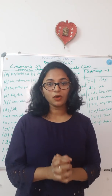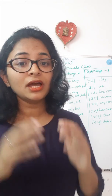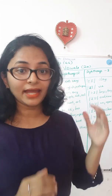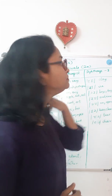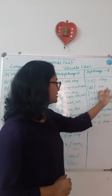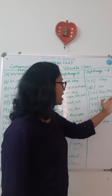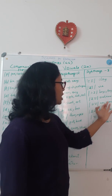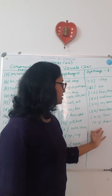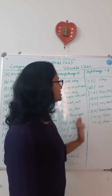Vowels which do not change quality when prolonged — they are monophthongs. But there are certain vowels which change quality when prolonged — they are called diphthongs, and we have 8 diphthongs. For example: /eɪ/ as in day; /aɪ/ as in ice; /ɔɪ/ as in boys, toy; /aʊ/ as in owl, now; /əʊ/ as in open; /ɪə/ as in deer, clear; /ʊə/ as in tour; /eə/ as in chair, careful, etc. So these are the 8 diphthongs.